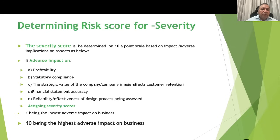Determining the risk score for severity: the first parameter is severity. The severity score is determined on a 10-point scale based on the adverse impact on aspects such as: what a design error contributes to profitability, strategy compliance, company values in terms of image and customer retention, financial statement accuracy, reliability, and effectiveness of the design process being assessed. A score of 1 represents the lowest adverse impact on the business and 10 the highest. If a design error is rated 10 by the cross-functional team, it means it has the highest adverse impact on the business.